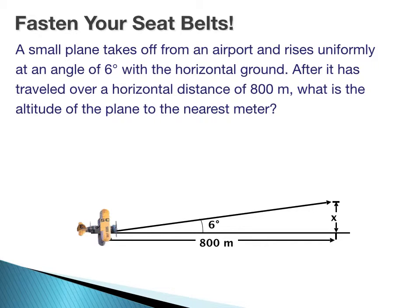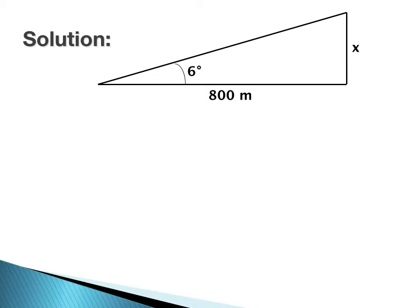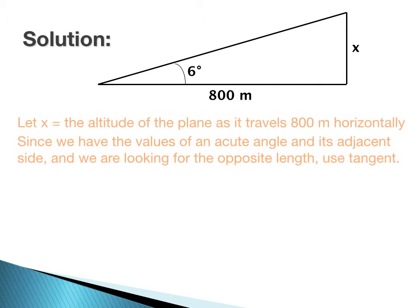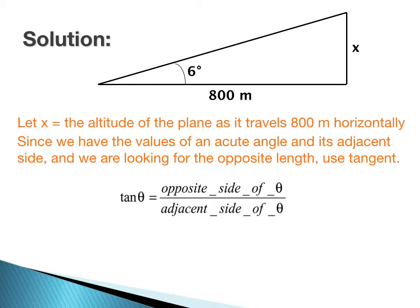We're going to use right triangle trigonometry to solve this problem. We're going to let x be the altitude of the plane. We can see that we use tangent for this problem because tangent is opposite over adjacent.